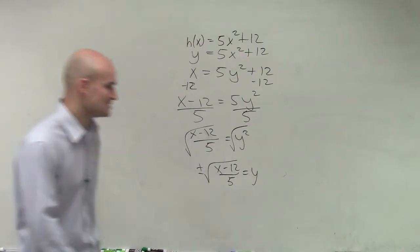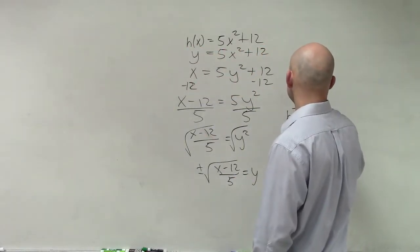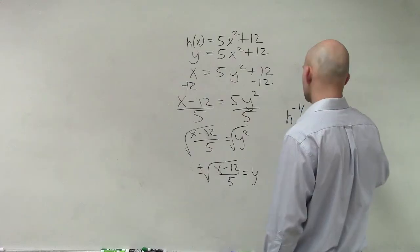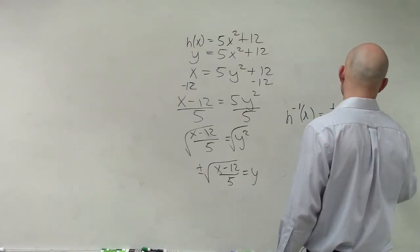Last thing we do is replace this with the inverse function notation. I'm just going to swap these around. So I'm going to rewrite that as h⁻¹(x) = ±√((x - 12)/5).